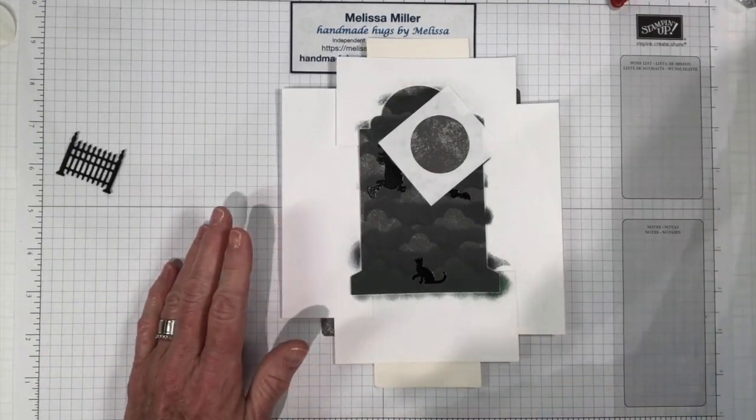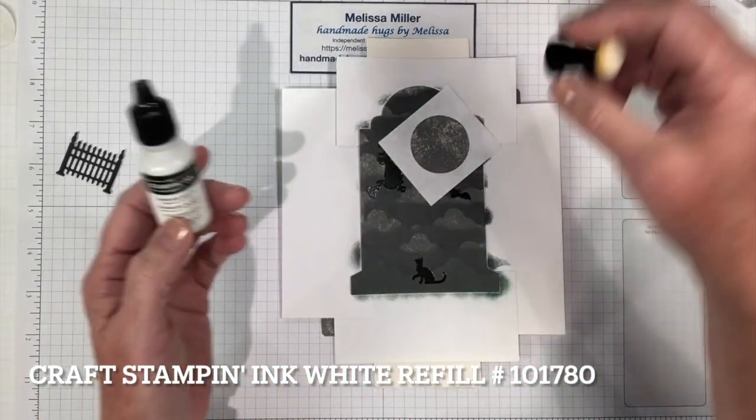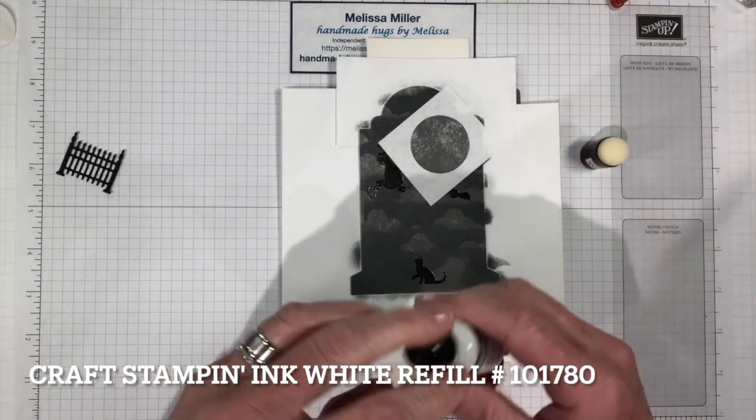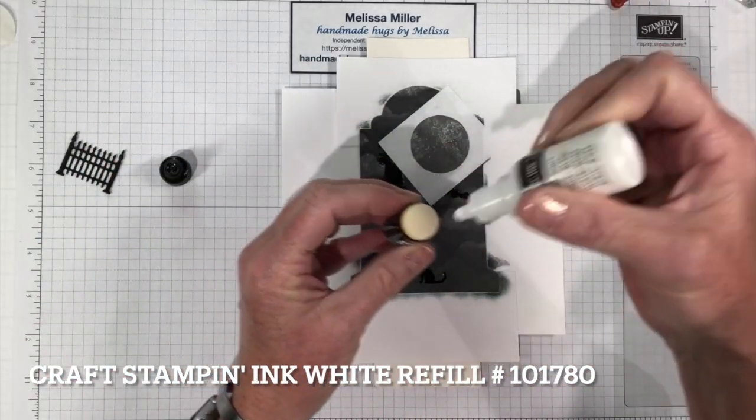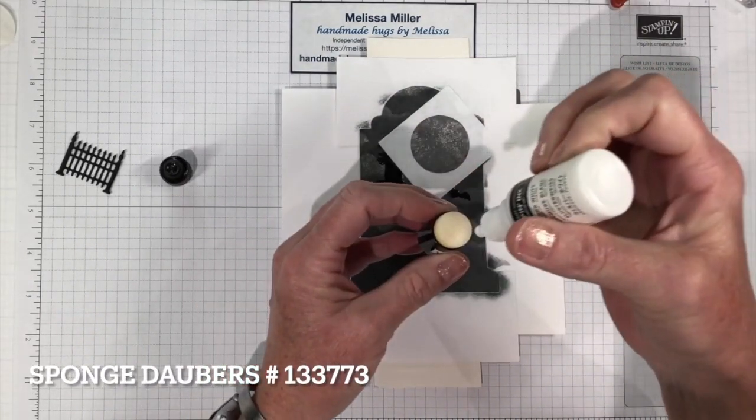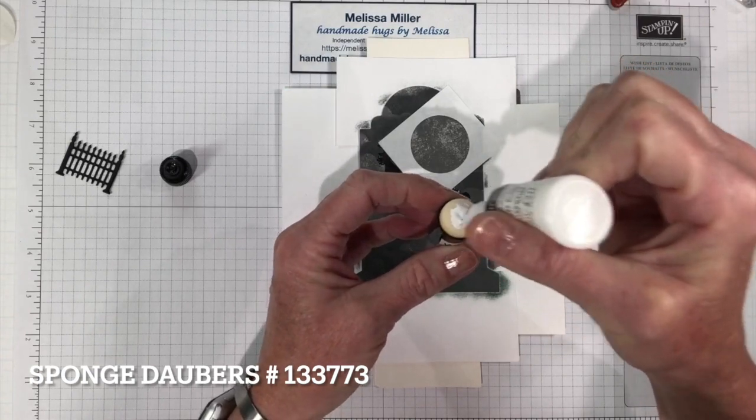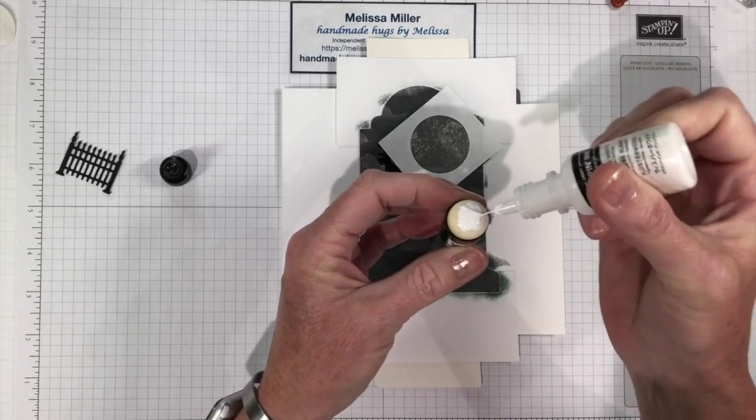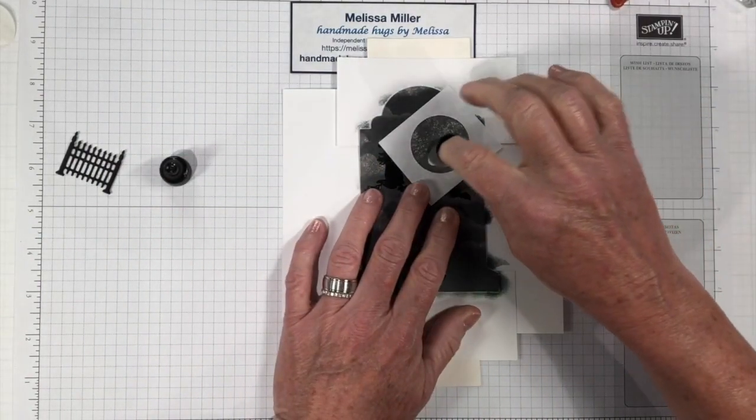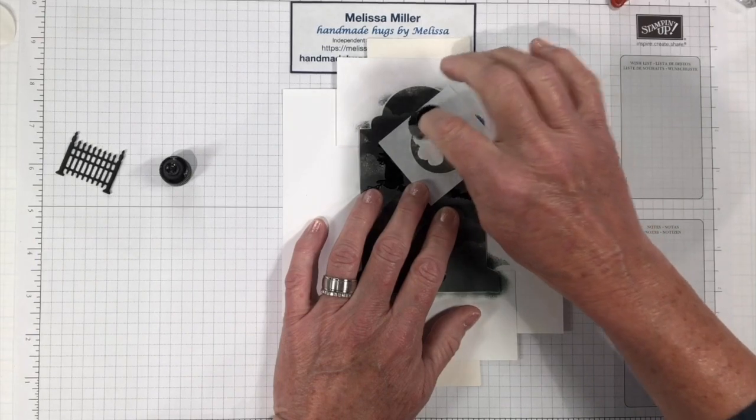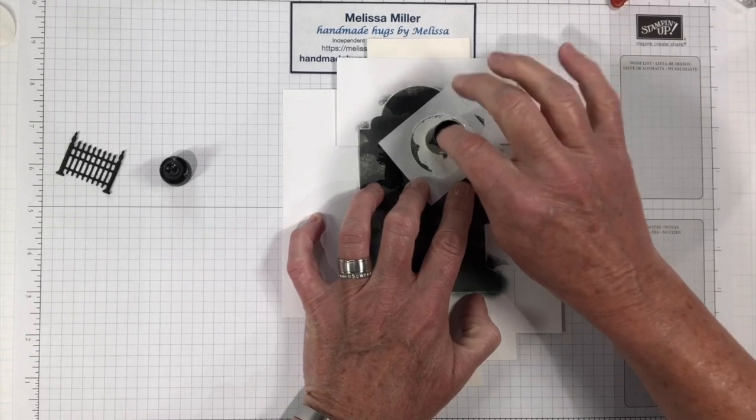I took my Whisper White Stampin' Ink refill and I took a sponge dauber. And I just put a little bit of ink on the end of the sponge dauber because I do want the moon white. I just took a little bit of ink on my sponge dauber. This is going to remain sticky so we don't need to use our VersaMark on this. We're just going to pounce on here and kind of make that cover that moon and make it nice and white.